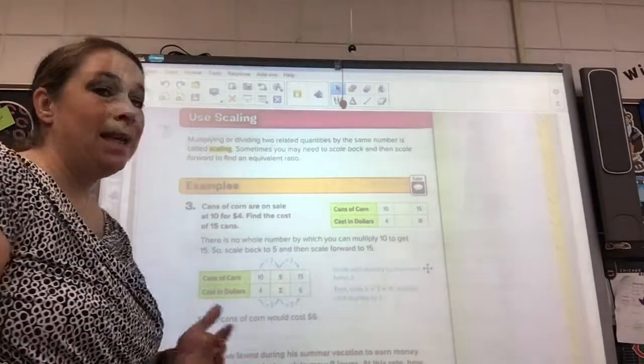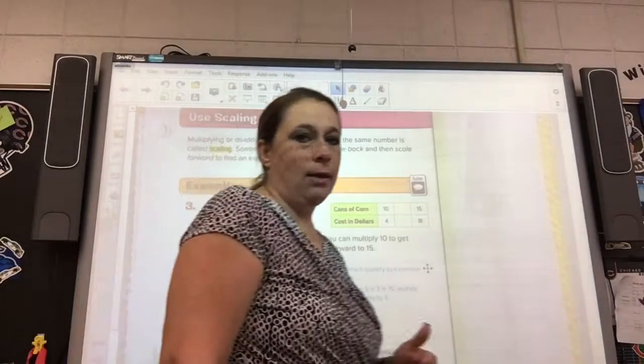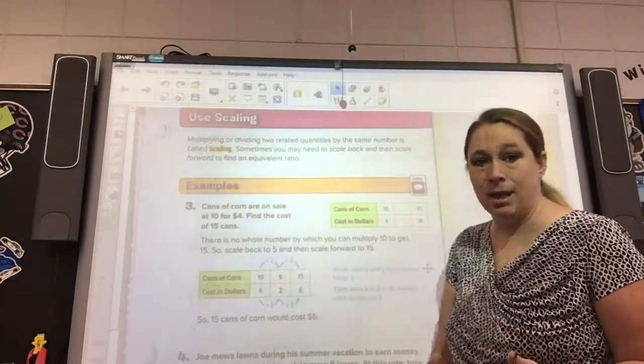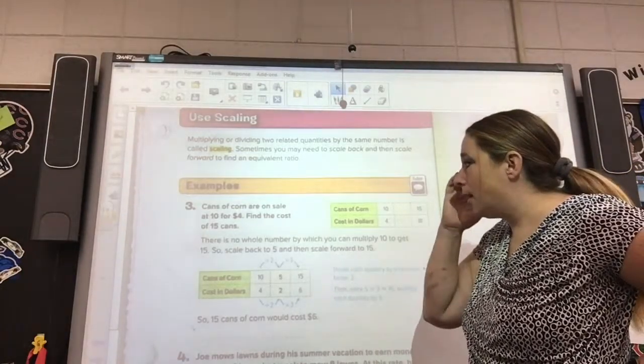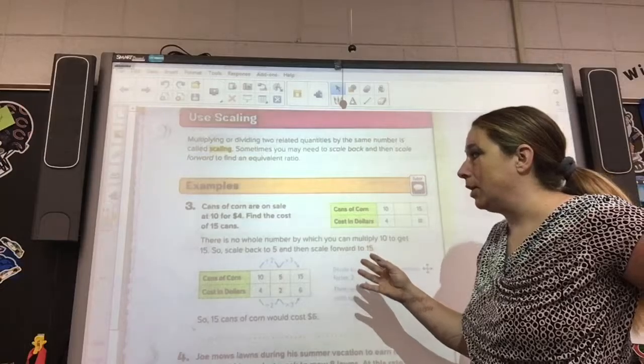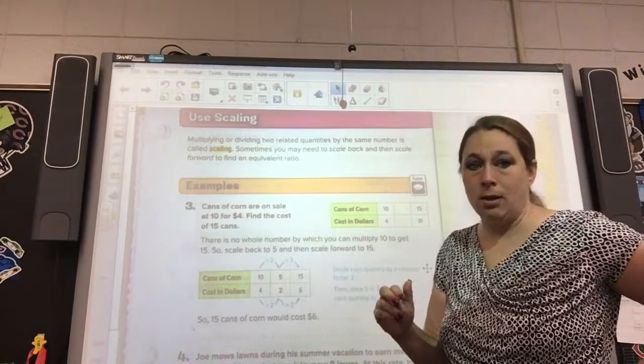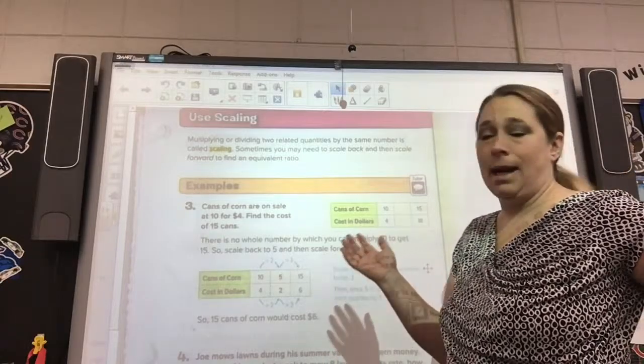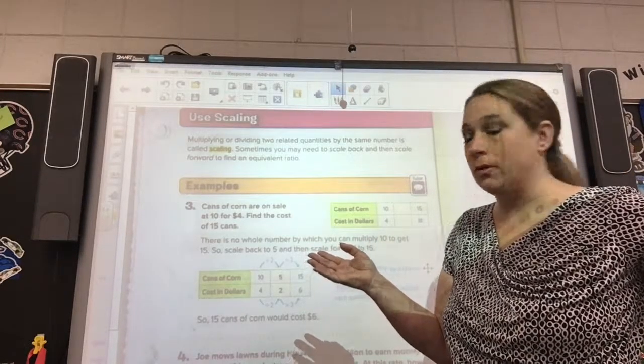Okay, now many times to get a ratio table filled completely, we actually have to scale up and then scale down. This example they give us here is done for us and it talks about cans of corn that are on sale at 10 for $4. Find the cost of 15 cans. Now why someone wouldn't just buy 20 or just 10, I don't know. But apparently this person wants 15.